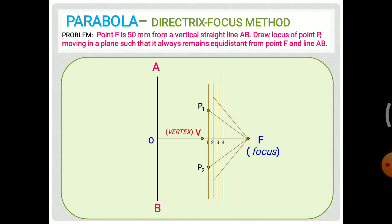Name these points P3 and P4, and repeat this process for the next points: O3, O4, and so on. Take O3 as length and F as center, cut an arc on the third vertical line — two points, one above and one below. Take O4 as length and F as center, draw arcs on the fourth divided line for two more points. These arcs must be drawn with a compass only, not freehand.